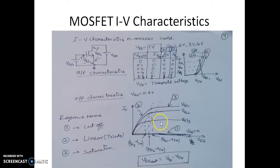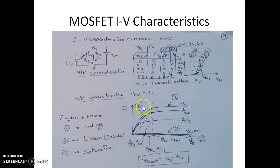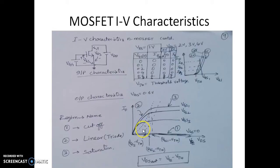Looking at the output characteristics, we can name the regions. Region 1 is the cutoff region where the MOSFET is off with zero drain current, when VGS is less than or equal to the threshold voltage. Region 2 is the linear (or triode) region. Region 3 is the saturation region where current is constant. For the linear region, VGS must be greater than VTH and VDS less than VGS minus VTH. For saturation, VGS must be greater than VTH and VDS must exceed VDSSAT.